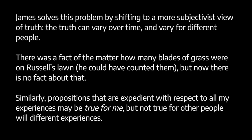James's response to this problem was to shift to a more subjectivist, relativist view of truth. James is somewhat difficult to interpret because he seems to endorse different theories of truth at different times. Sometimes he emphasizes objectivity — the idea that truth is what's expedient for the whole community over the long run, analogous to Peirce's view. At other times, James talks as if we can only define truth for specific individuals. He says: 'When you say the idea is true — does that mean true for you, the critic? Or true for the believer whom you are describing? The pragmatist always means true for him who experiences the workings.' So from this point of view, truth can vary over time and vary for different people.